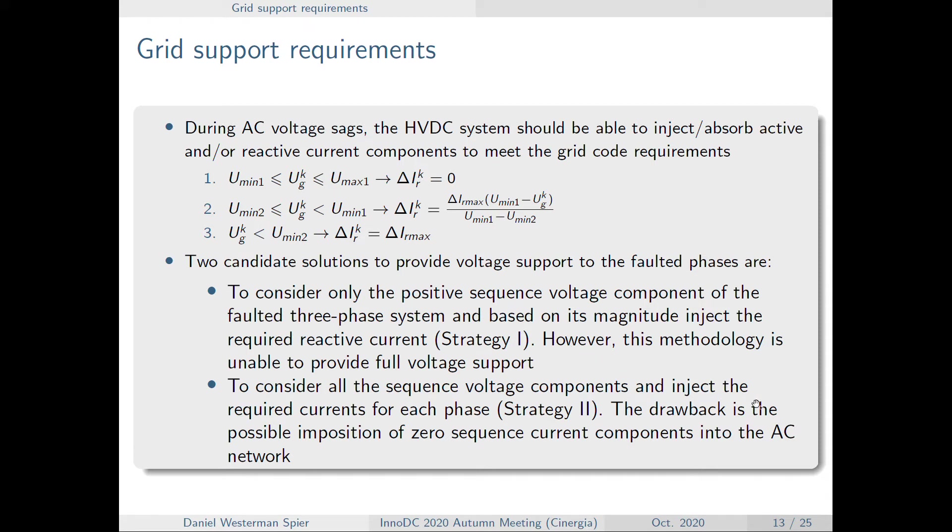However, it's unable to provide full voltage support. Another option would be to consider the positive, negative and zero sequence components of this voltage. However, if this strategy may try to impose zero sequence components in the AC side, and our system is a three-wire one, therefore it cannot have zero sequence current flowing through the AC side.